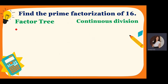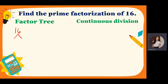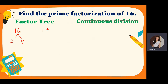So for the factor tree, it's like this. So let's say the given number is 16. First thing to do is you write 16 and then draw this. So think of two factors of 16, except one and itself. So what are the numbers that when you multiply, the answer is 16? So we have 2 times 8, or we can also use 4 times 4. Either way, it's just the same — the answer is just the same.